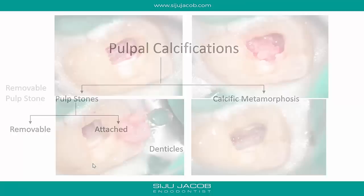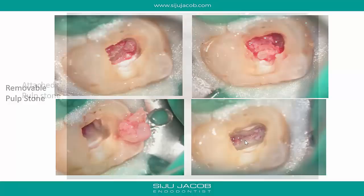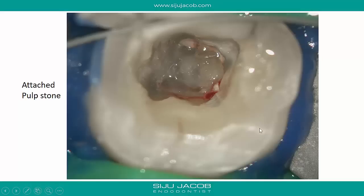Removable pulp stones, as the name suggests, are easily detachable — not adherent to the adjacent dentinal walls. You see them as hard calcific masses that can be easily removed with a sharp spoon excavator or ultrasonics, and they just come out in a big piece. Once removed, the underlying canals can be easily accessed. Attached pulp stones are more difficult because they are attached to the adjacent dentinal wall and not easily dislodged. You need magnification, preferably a microscope, to differentiate the calcification and precisely drill out the calcified part without removing excess dentine.